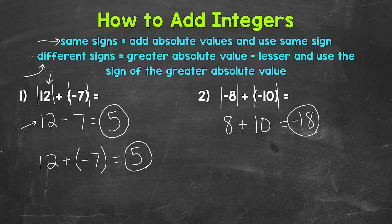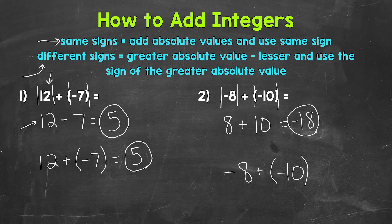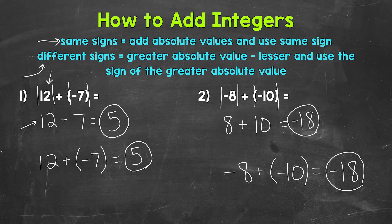If we were to think through this another way: we are starting at negative 8 and we are adding a negative 10, so that means we are decreasing in value by 10. That leaves us at negative 18. Think about your starting point — we have negative 8, and then adding that negative 10 tells us we are decreasing in value and end up at negative 18. Negative 18 is our final answer. That's how we add integers.